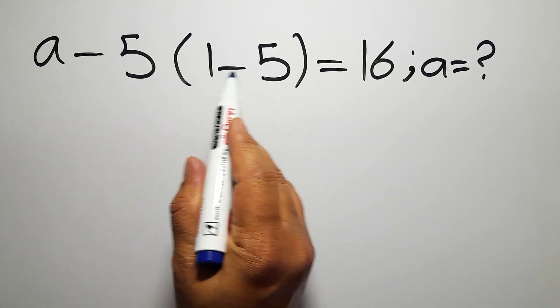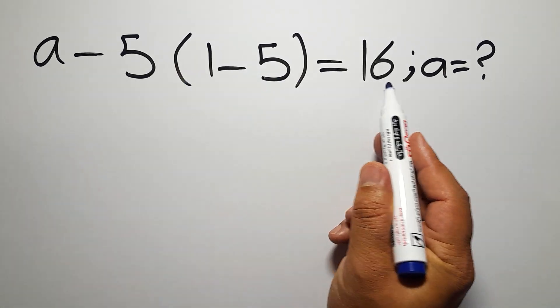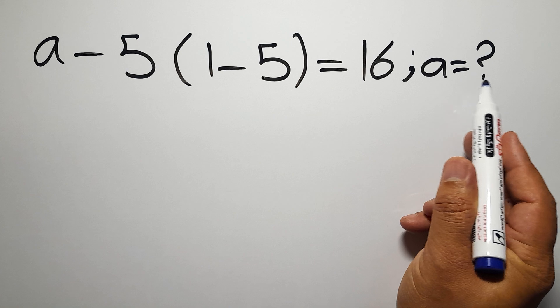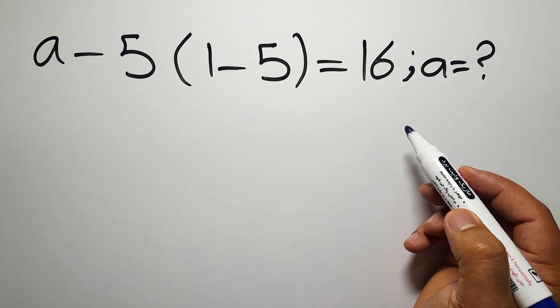A minus 5 times 1 minus 5 equals 16. Our goal is to find the value of A. Are you ready to solve? Let's go down to start it.